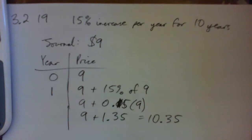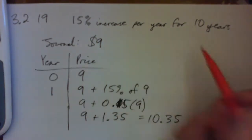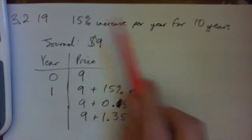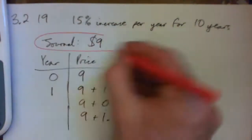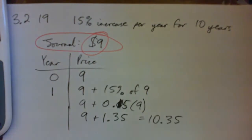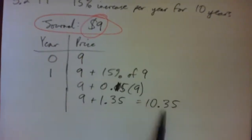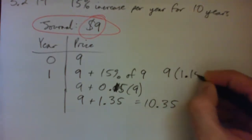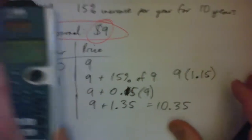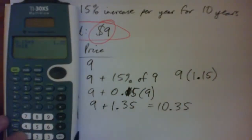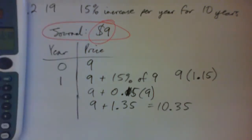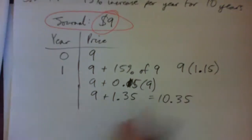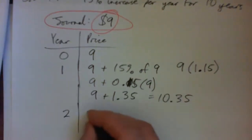We made this number up because we want to figure out what it looks like when something increases by 15% each year for 10 years. Now, nine times 1.15 will also give you $10.35 right off the bat. So after one year it's nine times 1.15.